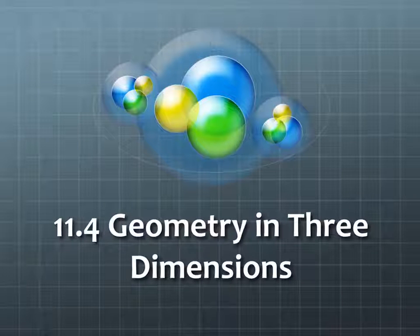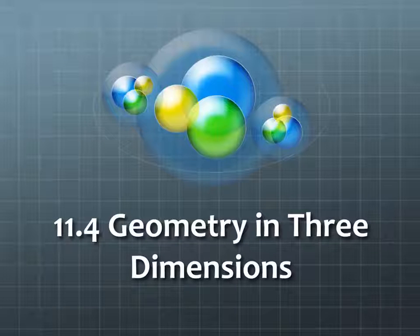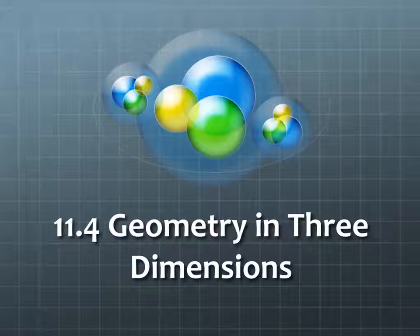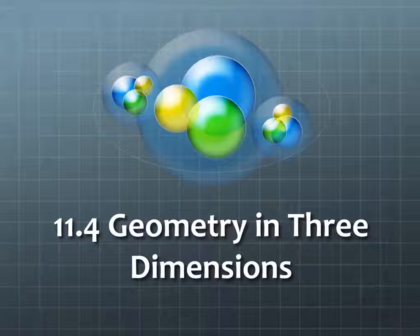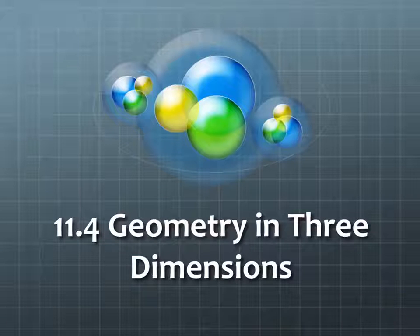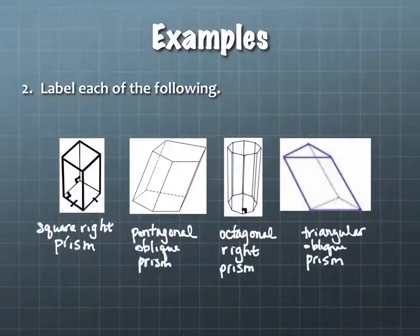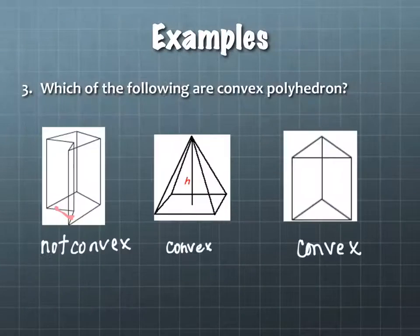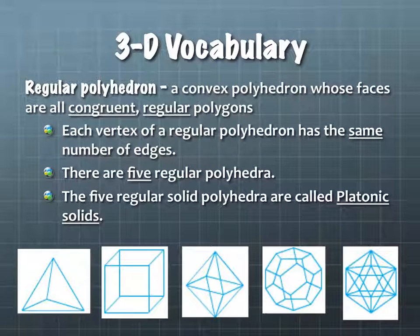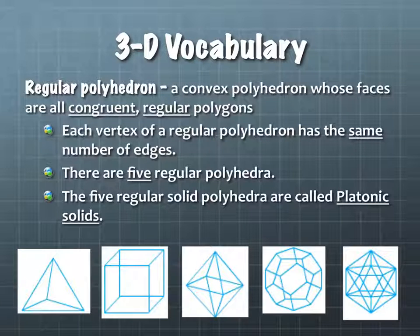Last time we were taking a look at section 11.4, which is Geometry in Three Dimensions. We had talked very briefly at the end about how many regular polyhedra there are. Does anybody remember? Five. Yeah, there are five regular polyhedra. We hadn't actually done much beyond just look at the pictures of them. They all have information about them on the following slide, so we're going to take a look at that next.